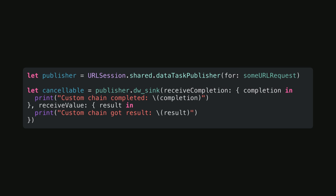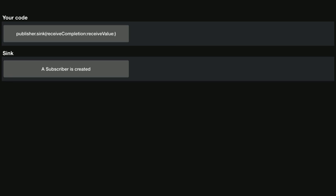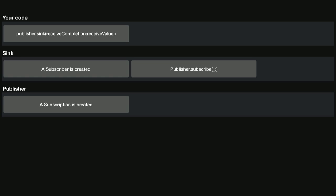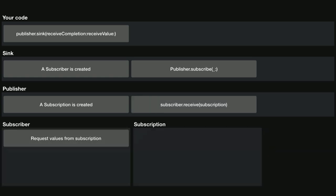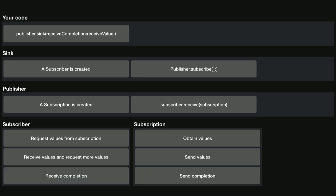With this, we can use a custom publisher with a custom subscription and a custom subscriber — we only need to swap in our custom DWDataTaskPublisher object. Let's go over it one more time. When Sink is called, we create a new subscriber and assign it to the publisher. The publisher creates a subscription and connects it to the subscriber. The subscriber asks for values from the subscription, which starts obtaining them, sends them back to the subscriber. This goes on until a subscription completes and sends the completion event to the subscriber. We've now implemented all of this.